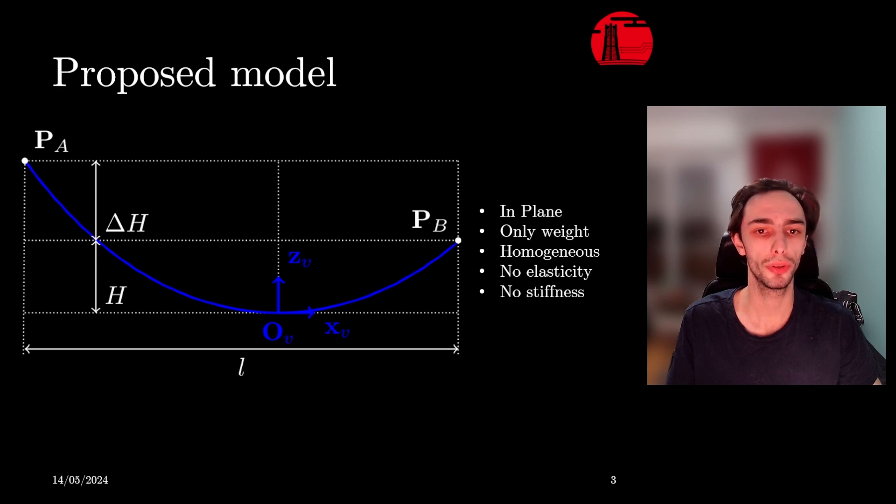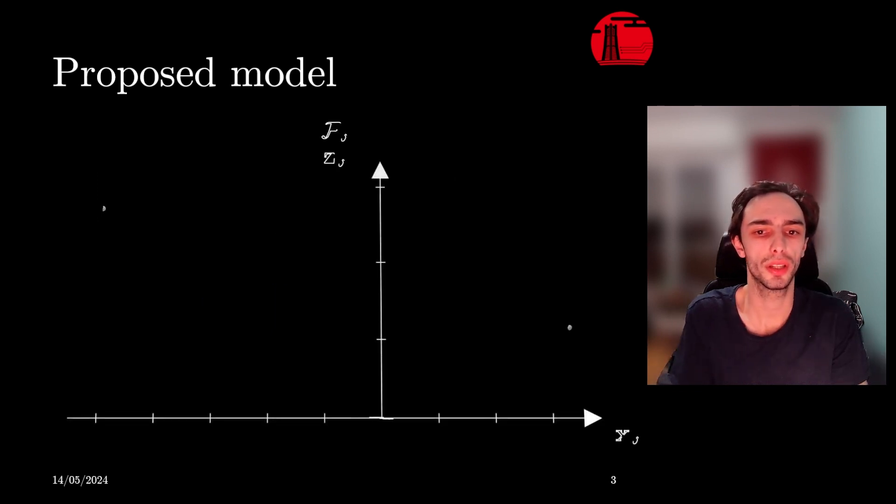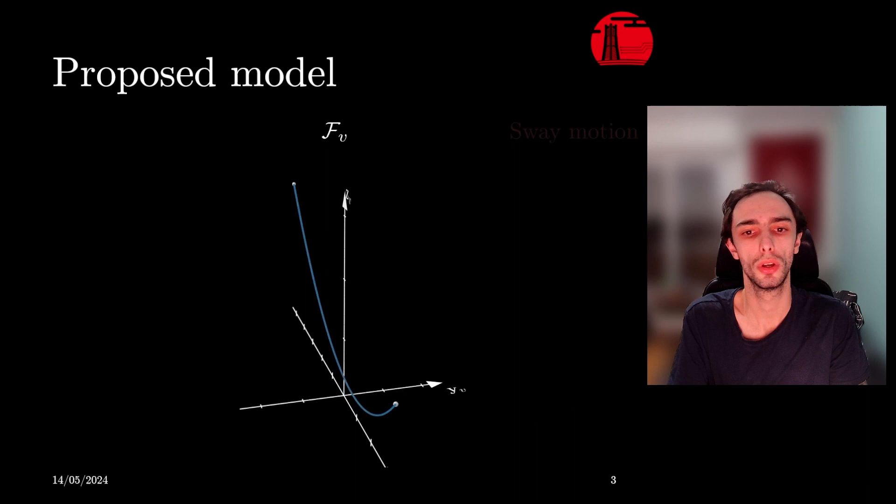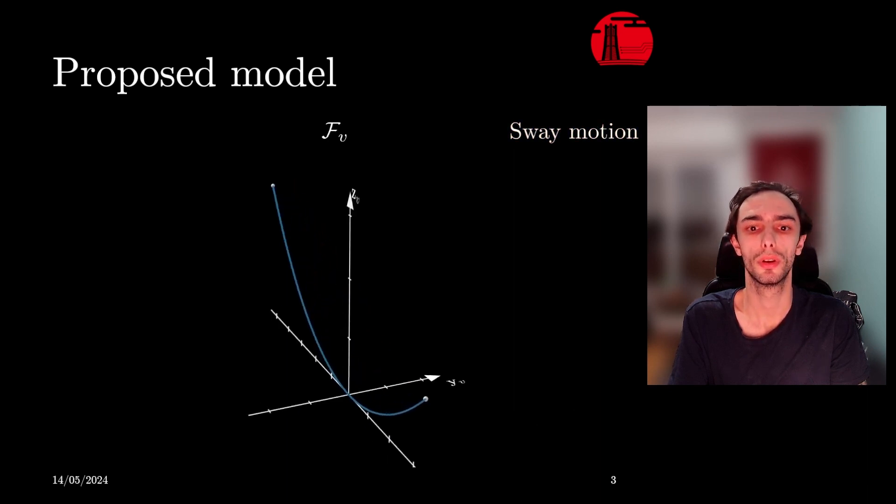However, the underwater tether is attached to a moving system and is subjected to hydrodynamic effects. We therefore propose to augment the catenary model by adding two degrees of freedom that aim to take these phenomena into account. Sway motion in red and, afterward, in green, surge motion.